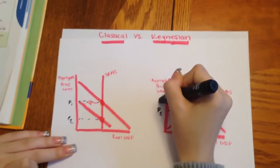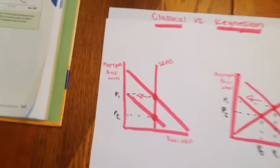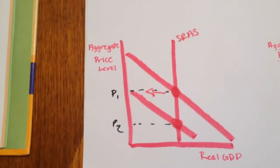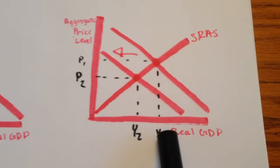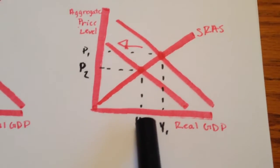And just finishing up, in case you didn't get a close enough look. There's the Classical, and there's the Keynesian. As you can see, the output here changes and decreases, and here the output stays the same.